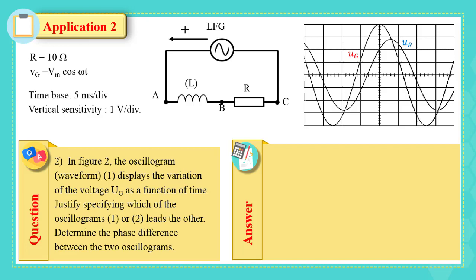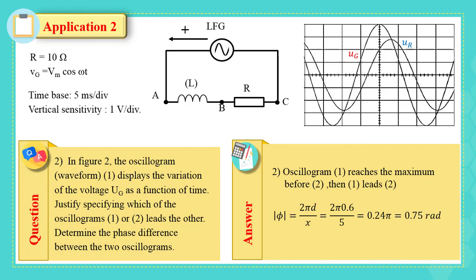In Figure 2, oscillogram waveform 1 displays the variation of voltage Ug as a function of time. We must justify which of oscillograms 1 or 2 leads the other, then determine the phase difference. According to the figure, Ug reaches the maximum before Ur, and Ug represents waveform 1, so waveform 1 leads waveform 2. Using the formula, the absolute value of the phase difference equals 2π·d/x, where d equals 0.6 divisions and x equals 5 divisions, giving a phase difference of 0.24π, which equals 0.75 radian.